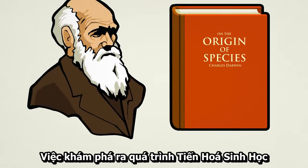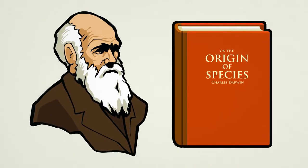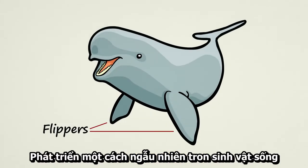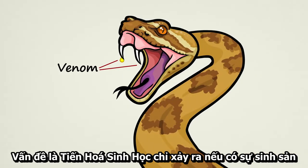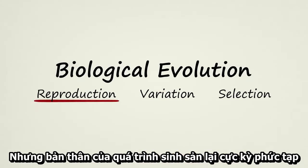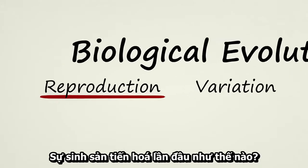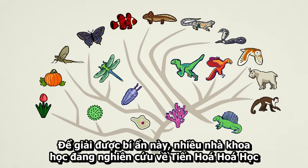The discovery of biological evolution was an incredible breakthrough in science. It explained how new complex traits and abilities develop naturally in living things. The problem is, biological evolution depends on reproduction in order to work. Reproduction, however, is an extremely complex process in and of itself. This begs the question: how did reproduction first evolve? To try and solve this mystery, many scientists are looking into chemical evolution.